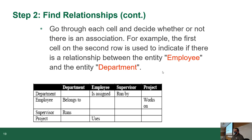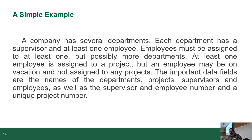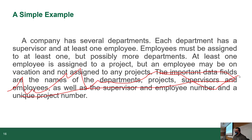A supervisor runs a department with no other relationships. A project uses an employee and has no other relationships. If you reread the paragraph, nowhere — other than the important data fields section — is an employee and a supervisor in the same sentence, and not once is a project and a department in the same sentence.